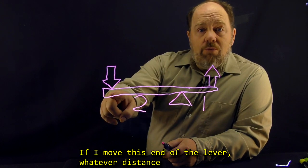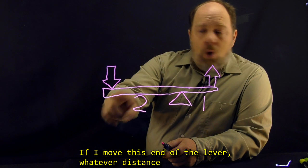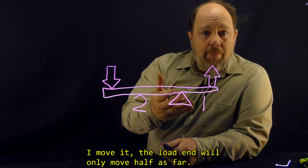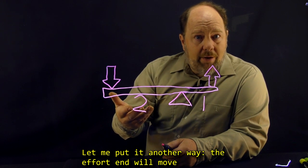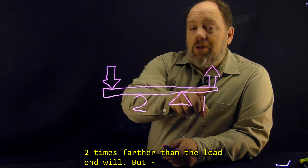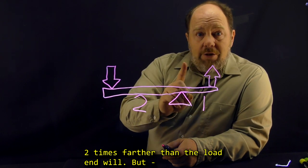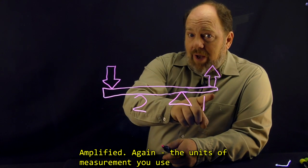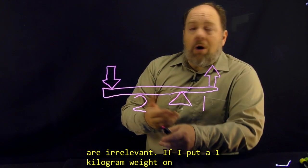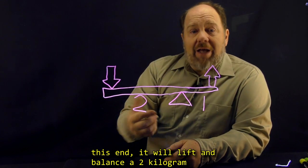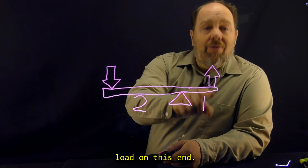If I move this end of the lever, whatever distance I move it, the load end will only move half as far. Let me put it another way, the effort end will move two times farther than the load end will, but whatever force I apply on the effort end gets amplified. Again, the units of measurement you use are irrelevant. If I put in 1 kg weight on this end, it will lift and balance a 2 kg load on this end.